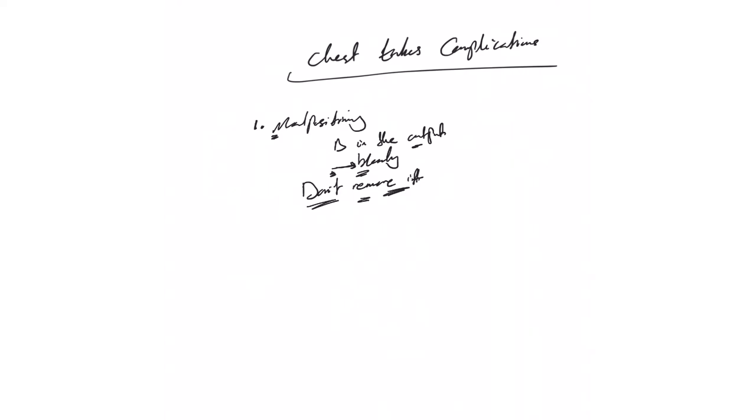second I'll show an x-ray of how malposition can occur. Number two is infections. Any device, including chest tubes, needs to be removed as soon as possible if we don't need it. Infection could be empyema, and the output in the chest tube may decrease, may become purulent, or